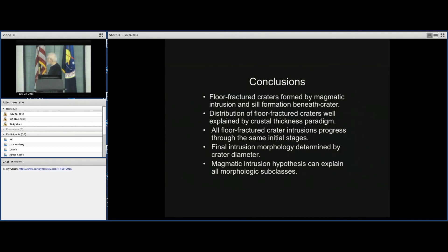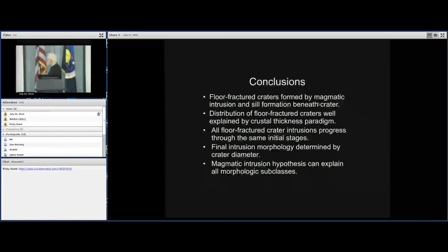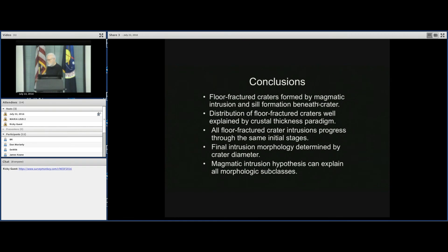This is basically the story so far. Floor fractured craters are formed by magmatic intrusion, sill formation beneath the crater. The distribution of the floor fractured craters is well explained by crustal thickness paradigm. There are other factors as well, obviously, but the general paradigm seems to hold. And all floor fractured crater intrusions progress through the same initial stages. And then final intrusion morphology is determined by crater diameter as we saw in those illustrations. Magnetic intrusion hypotheses seem to be able to explain all the observations we've seen thus far.